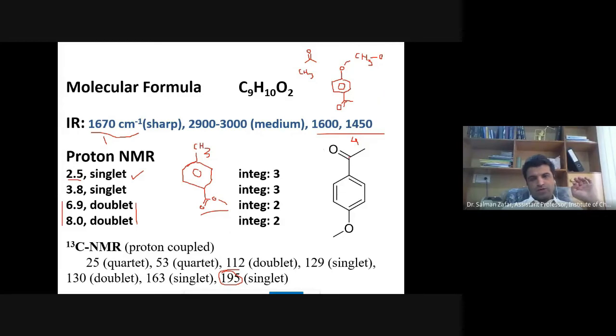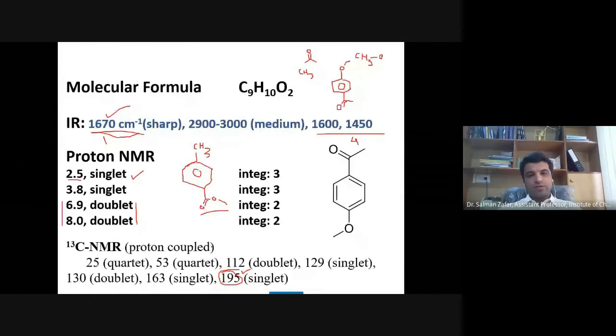Second reason why this structure is correct and this is wrong. A normal isolated ketone which is not conjugated appears around 1715 per centimeter. And if it is conjugated, then its wave number decreases to about 1670 or 1680. A normal ester appears around 1735 to 1740, and even if it is conjugated, it may not go down to 1670. It gives the value 1750 to 1710. But it may not go down to 1670. 1670 is only for conjugated ketone. And isolated ketone usually appears at 200 or 202 or 205 ppm.